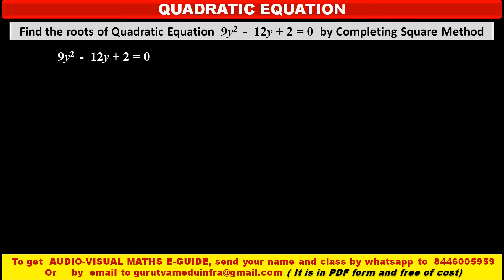See, now the given equation is 9y² - 12y + 2 = 0 and we have to solve this by using completing square method.